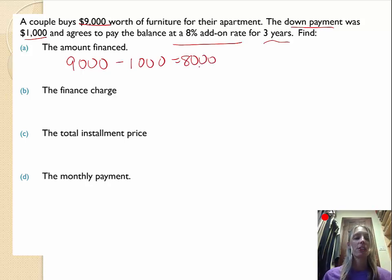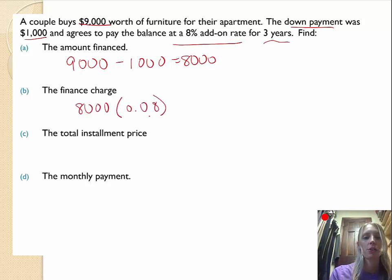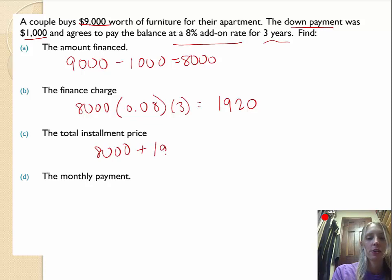The finance charge. That's going to be the amount financed times the interest rate as a decimal or fraction. So we're going to divide by 100 times the time in years. And when we multiply that through, we end up getting $1,920. And the installment price, the total installment price, that's going to be the amount financed plus the finance charge. And that's going to end up being $9,920.